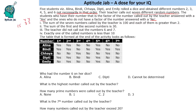We are given additional conditions: the sum of the seven numbers is 100 and each is greater than two. The sum of the first and second numbers is 30. The teacher did not call out the numbers six and seven. Exactly one of the called numbers is less than ten. We are also given a table. We are not told which numbers were called out or which person got which dice number — we need to figure all of that out.